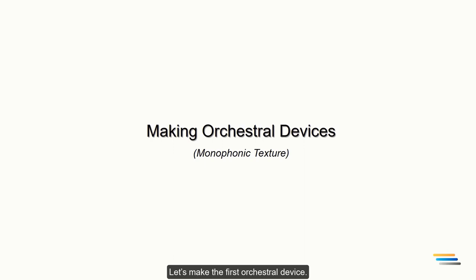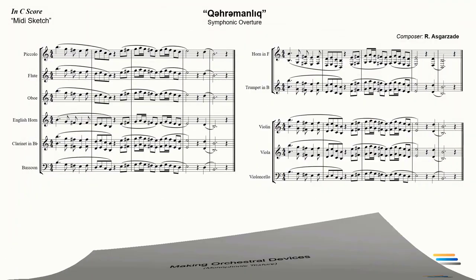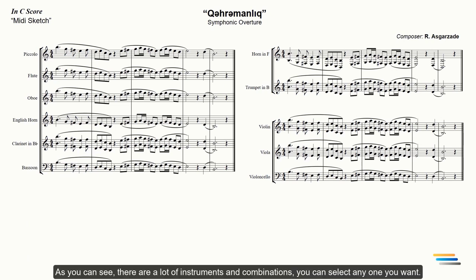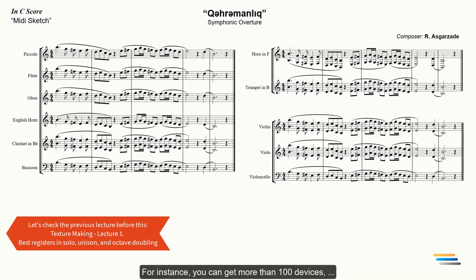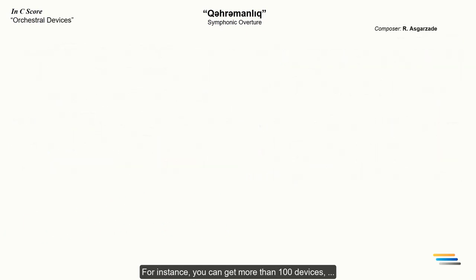Let's make the first orchestral device. As you can see there are a lot of instruments and combinations. You can select any one you want. For instance you can get more than a hundred devices if you choose just a combination of the flute with different instruments.